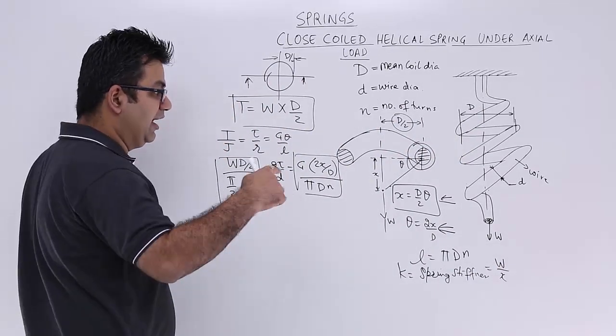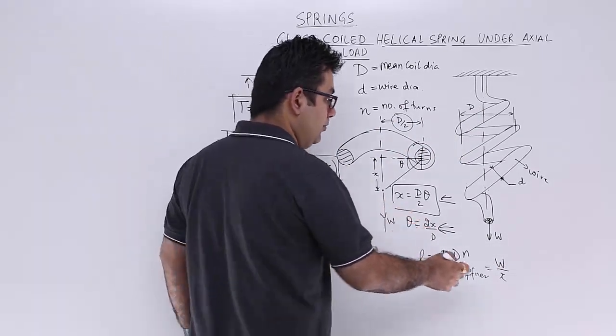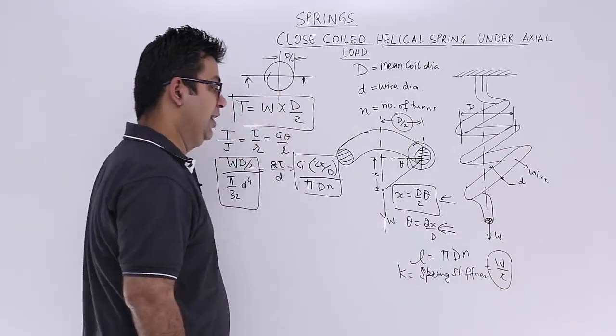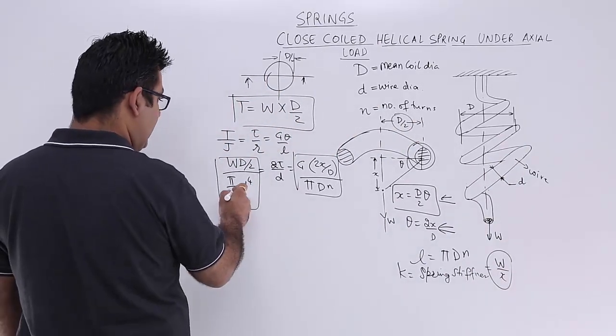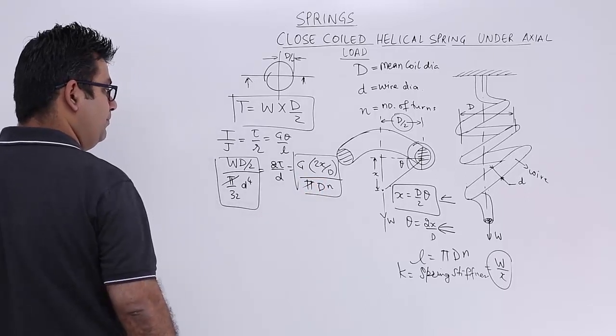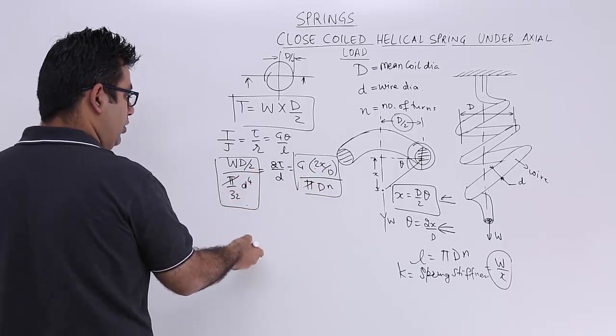So this is load upon the displacement X. So I need to get a value or a ratio for W by X. So I will equate these two parts. So from here I will get I can cancel off pi and pi. This two will come down. This two four.